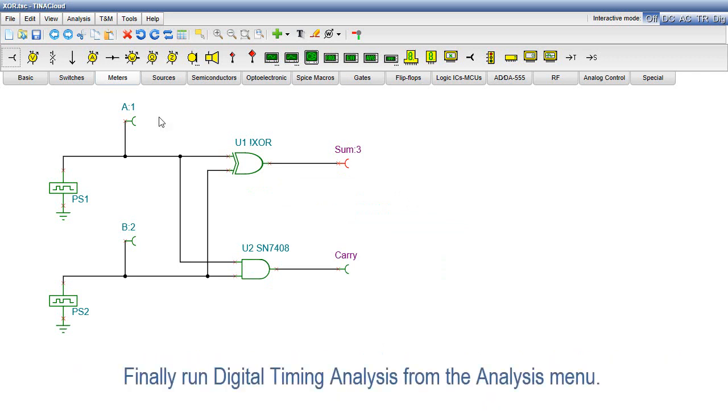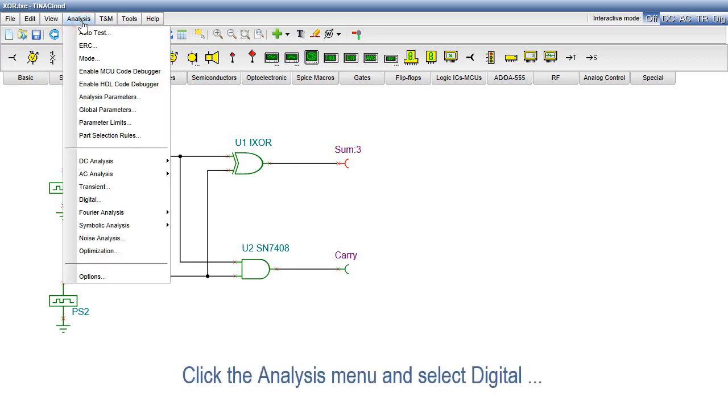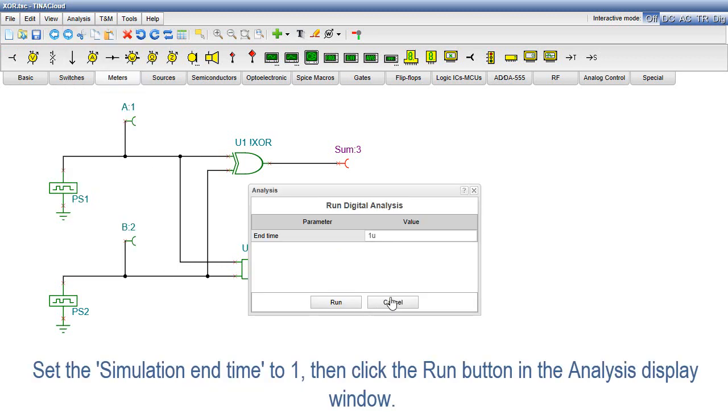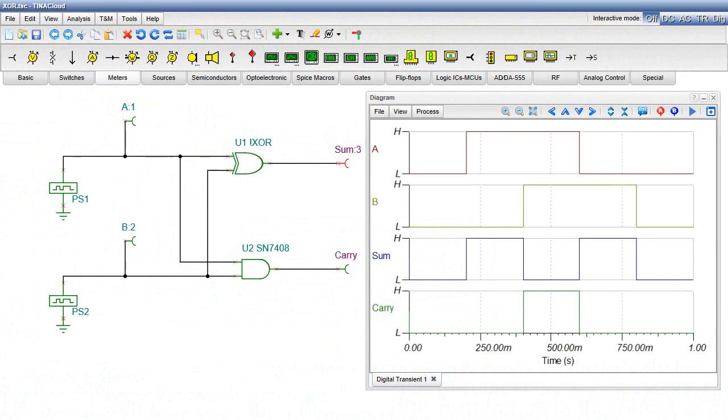Finally, run Digital Timing Analysis from the Analysis menu. Click the Analysis menu and select Digital Analysis. Set the simulation end time to 1. Then, click the Run button in the Analysis Display window. Now, all signals are displayed separately in a time diagram.